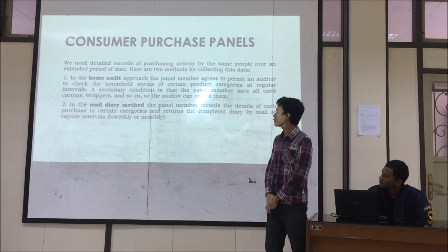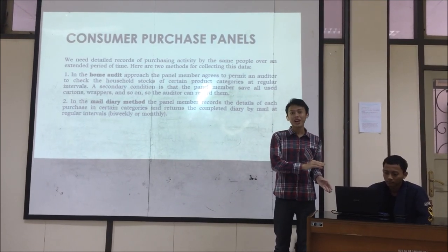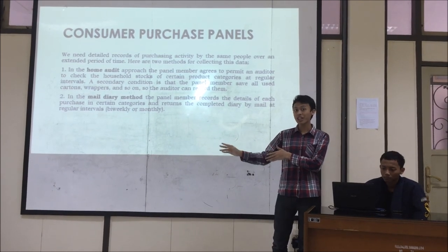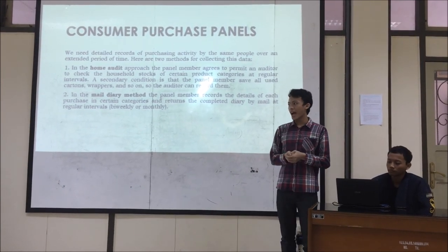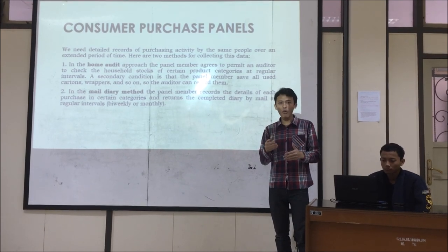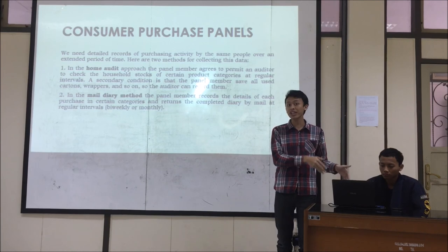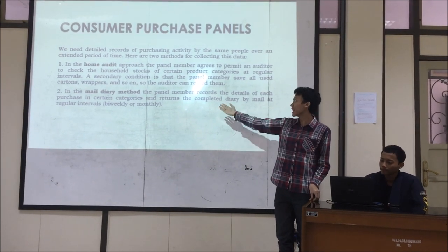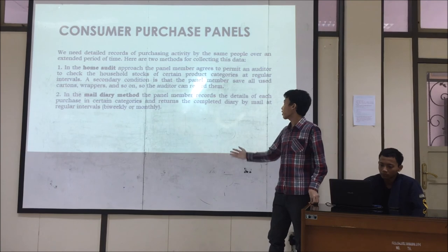Now we move to the second tool: consumer purchase panels. Consumer purchase panels involve the consumer who is being researched directly — not through an auditor. As explained, auditors can show sales over a period of time, but they cannot show who bought the product and how frequently they bought it. Consumer purchase panels can do that. That's why we need a detailed report of purchasing activity by the same people over an extended period of time. There are two methods for collecting this data: the home audit and the mail diary method.